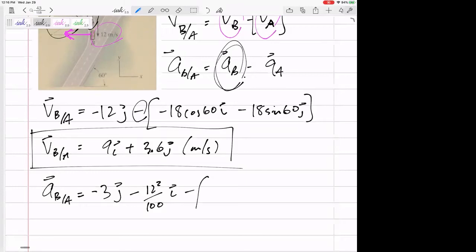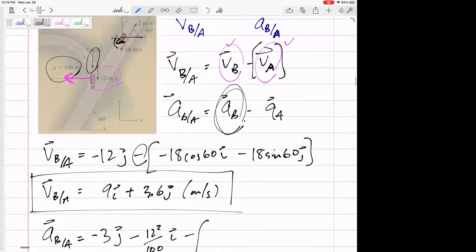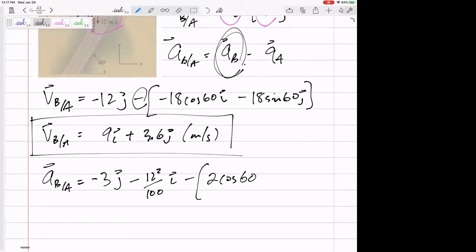All right. So minus the acceleration of A. A is not in a circular path. You don't have to worry too much. Just it's speeding up or slowing down. It's going down this way, but it is slowing down, which means its acceleration is back. So acceleration is up there. So 2 cosine 60, 2 cosine 60 in the I, and 2 sine 60 in the J. And so just be careful. Make sure that minus is distributed to both of those.